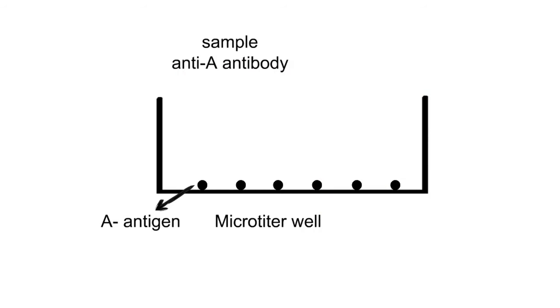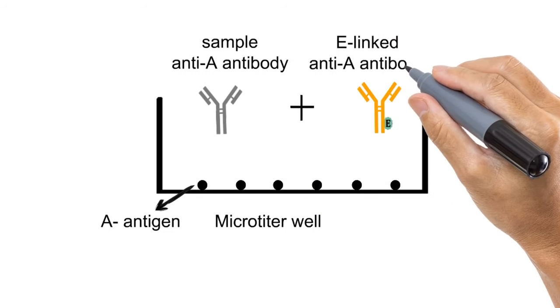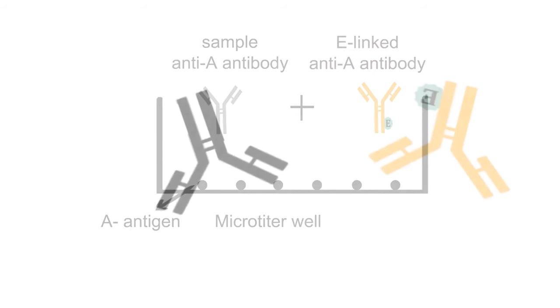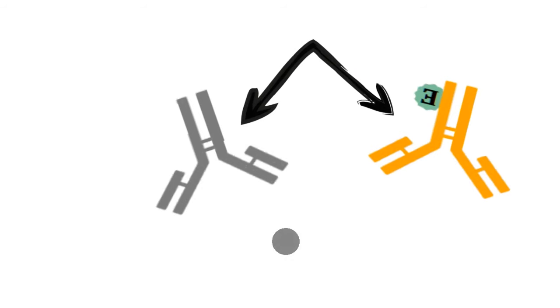After this, the sample containing anti-A antibodies whose concentration is to be determined and a fixed amount of enzyme-linked anti-A antibodies are added to the well.